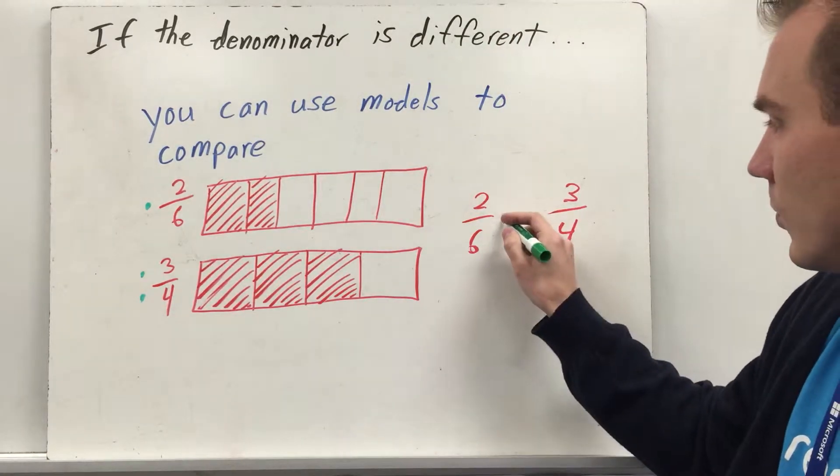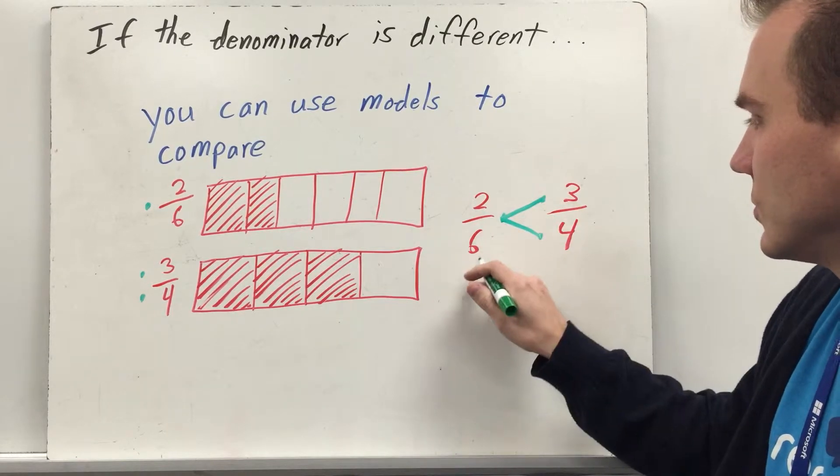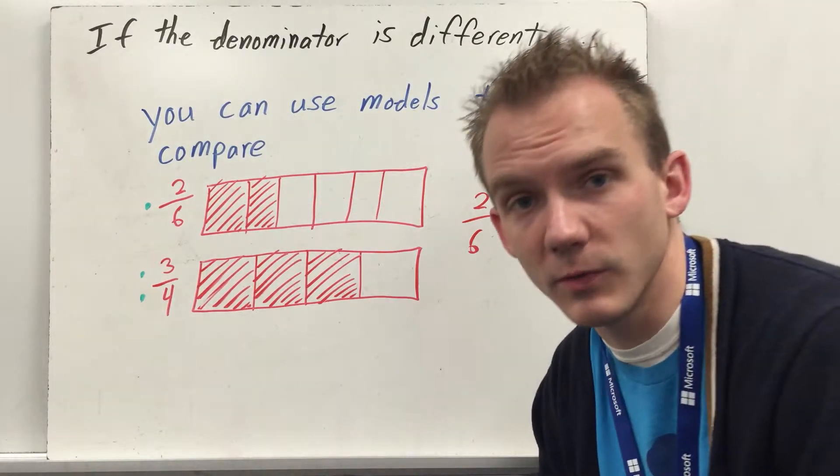So when I come over here, I put one dot by the two-sixths, two dots by the three-fourths, and I connect them, so two-sixths is less than three-fourths.